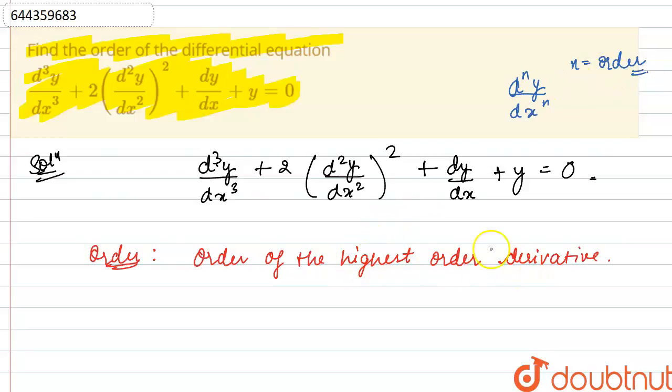Order of the highest order derivative. The highest order derivative present in this differential equation is d cube y by dx cube which is a third order derivative. Here the value of this n is equals to 3.